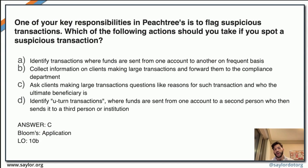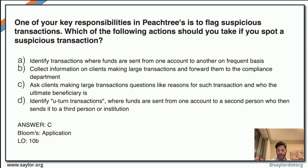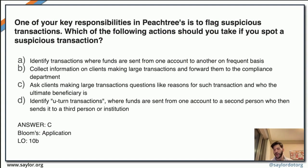This question asks Peachtree to flag suspicious transactions. You need to look at the amount of money being transacted, the persons involved, their backgrounds, and to whom funds are going. Every time there is a large transaction, clients should be asked questions about the reasons for these transactions and who the ultimate beneficiaries are. The answer for this question is C.